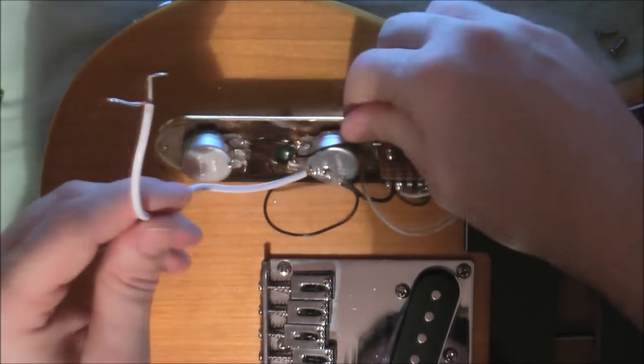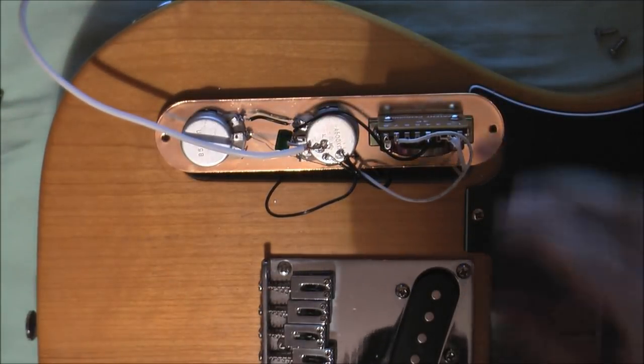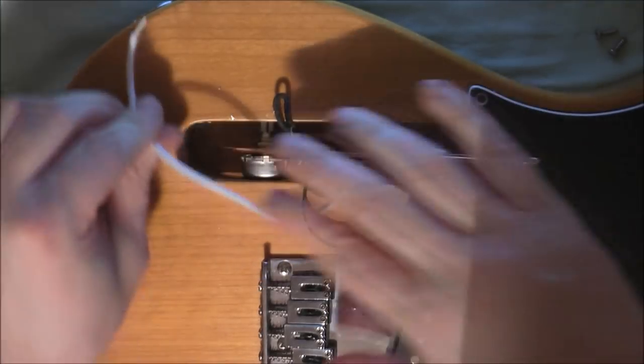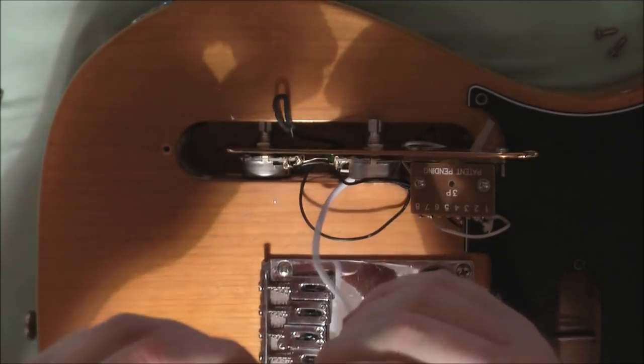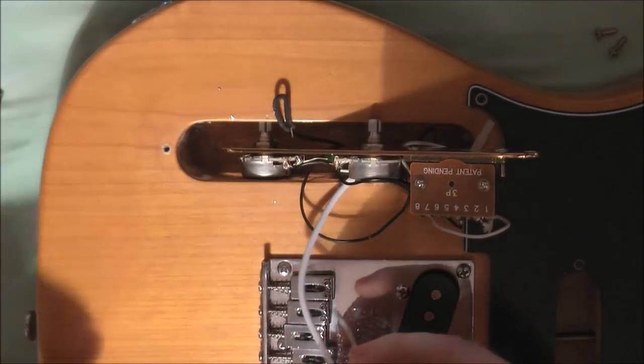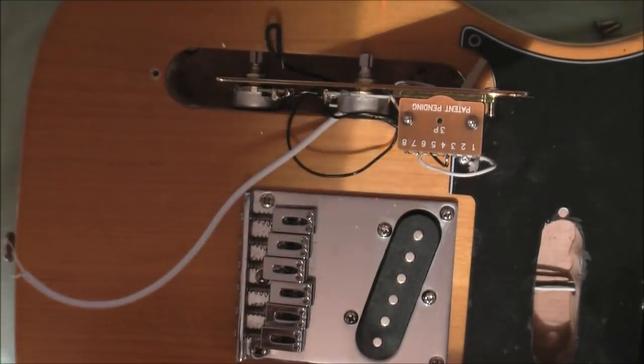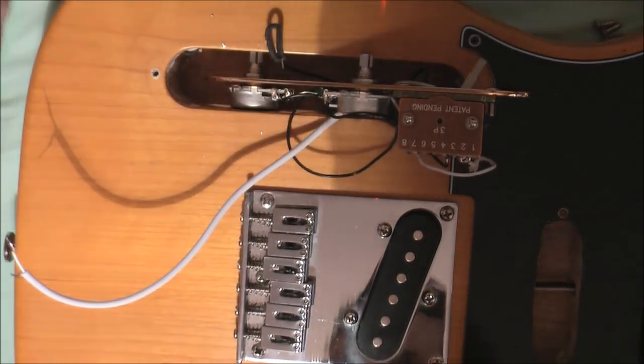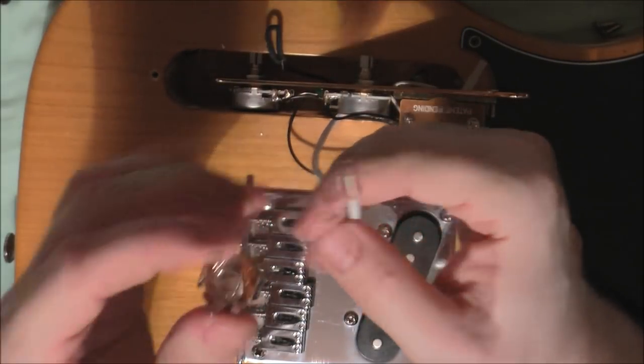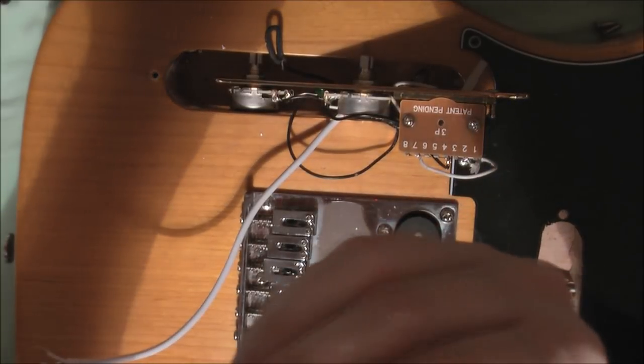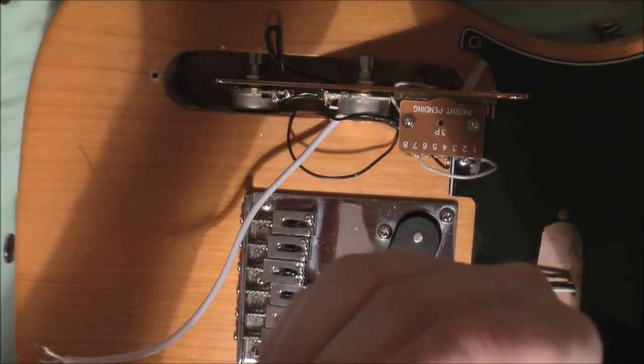With regards to wiring up the output socket, obviously you want to feed that wire through so that it comes out of the side there. And then you've got two wires there. Now the sheathed wire, if I can show you. There we go.